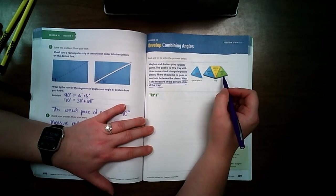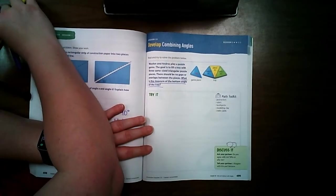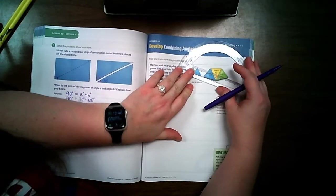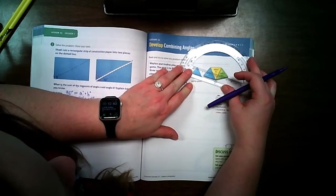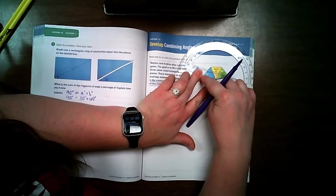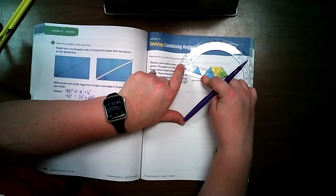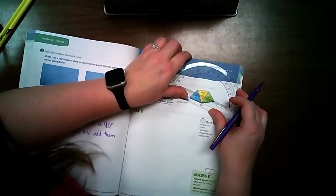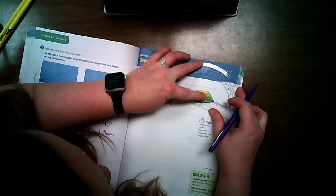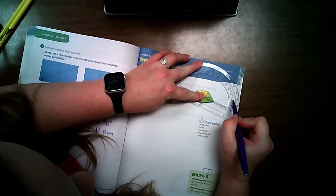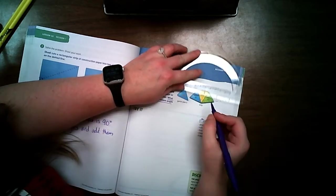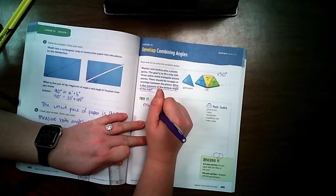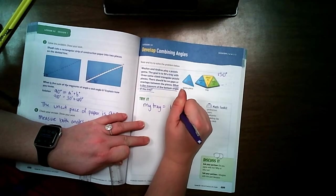So there's a couple of ways that we can do this. The first way is we can measure the total of the entire tray. We're going to get our protractor and we're going to line it up on the vertex. This is on my zero. I'm going to follow it around and it looks like it's lined up to the 150 degrees. So altogether, my tray equals 150 degrees.